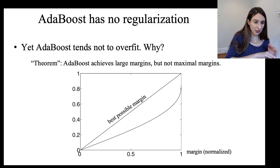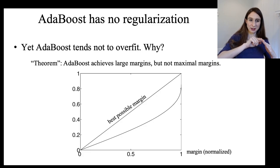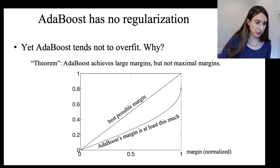If the achievable margin is like point five, then if you could get the best possible margin you could get is point five. Right, that's right along that diagonal. But AdaBoost achieves a margin that is at least that much for this funky function over here.